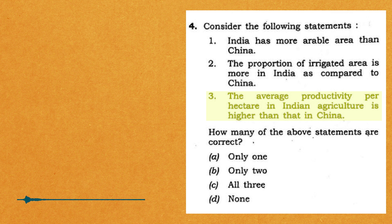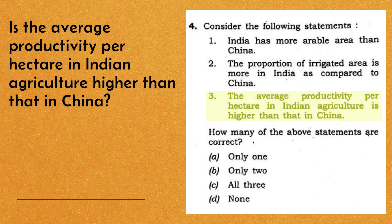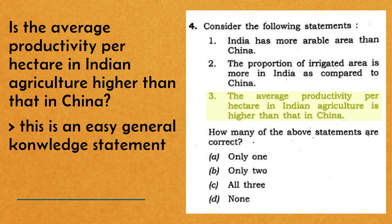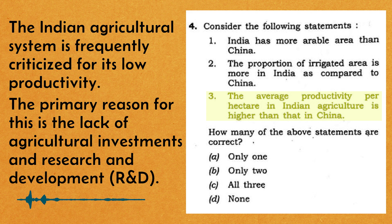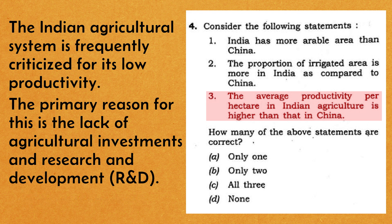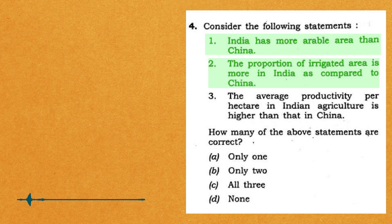Aur teesri statement jismein bola gaya hai ki India ki average productivity per hectare, China ki productivity per hectare se zyada hai — ab ye statement ek easy statement hai, kyunki India ke agricultural system ki ek major criticism ye hai ki India ka area under cultivation toh poori duniya mein sabse zyada hai, par phir bhi India ka productivity level kaafi kam hai. Aur aisa isliye hai kyunki India mein modern agricultural technologies aur research and development par kaafi kam invest kiya jaata hai. Toh ye statement bhi easily solve hoti hai, aur ye statement galat hai. Toh hum conclude kar sakte hain ki pehli statement sahi hai, doosri statement bhi sahi hai, aur teesri statement galat hai.